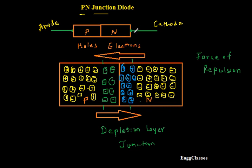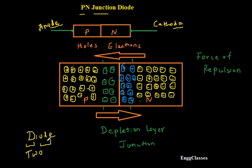Now we can understand the name 'diode': 'di' stands for two, because I have two semiconductors — P-type and N-type. The name 'diode' also comes from anode and cathode — towards the end 'ode' is there, and joining that to 'di' gives diode. So now I have a new electronics component called a diode. This is the basic operation of the P-N junction diode. If there are any doubts, please let me know in the comment section. Subscribe to NG Classes for more videos on basic electronics. Thank you everyone for watching.